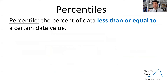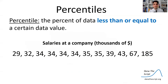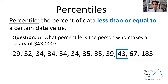So how can we compare these performances? That's where we use percentiles. Percentiles are the percent of data that are less than or equal to a certain data value. Note: in AP stats this is always less than or equal to. Here's an old data set of 12 salaries at a company in thousands of dollars. At what percentile is the person who makes $43,000?